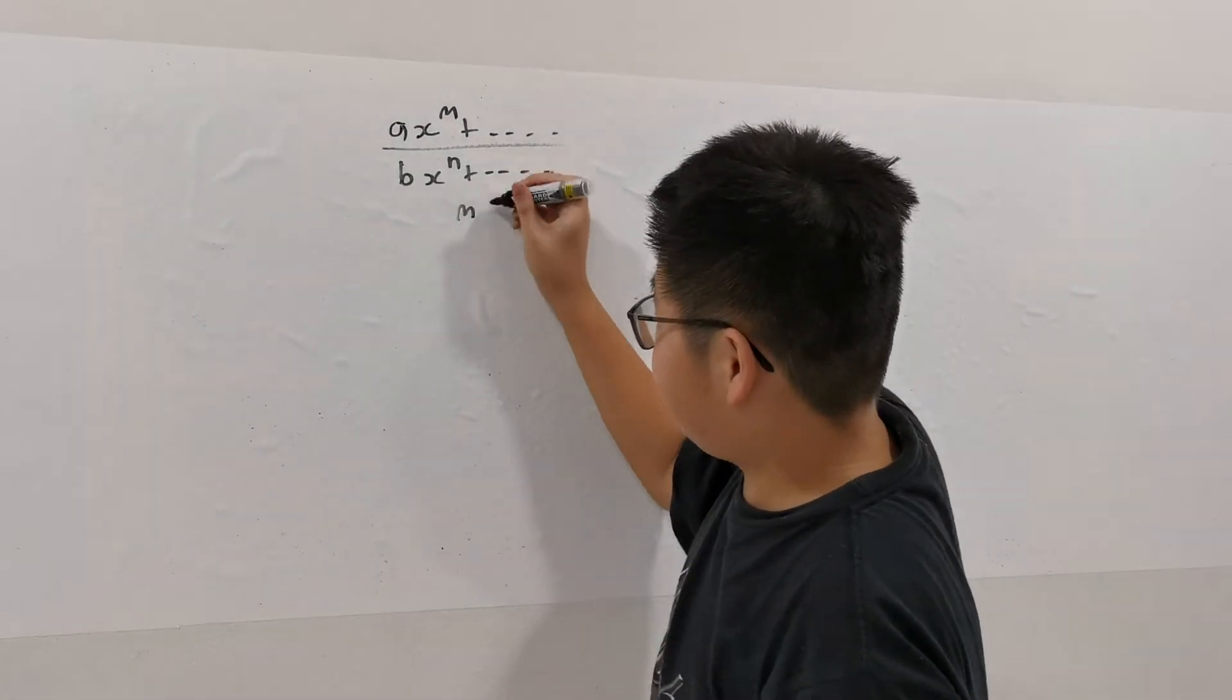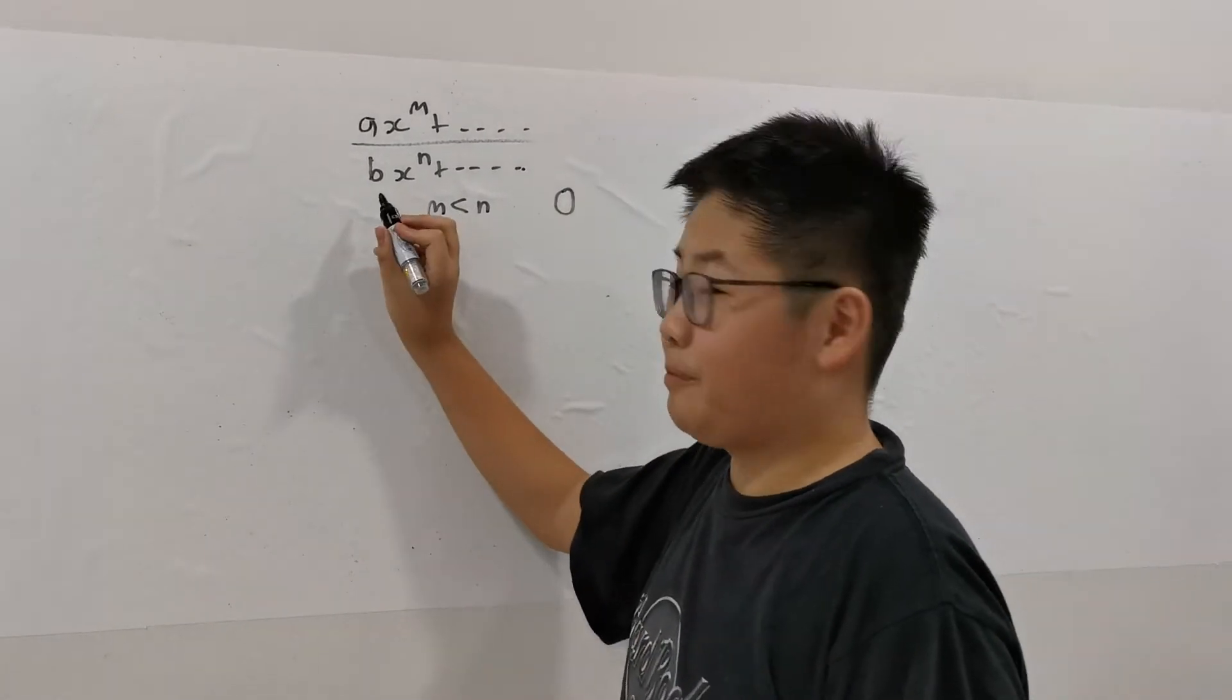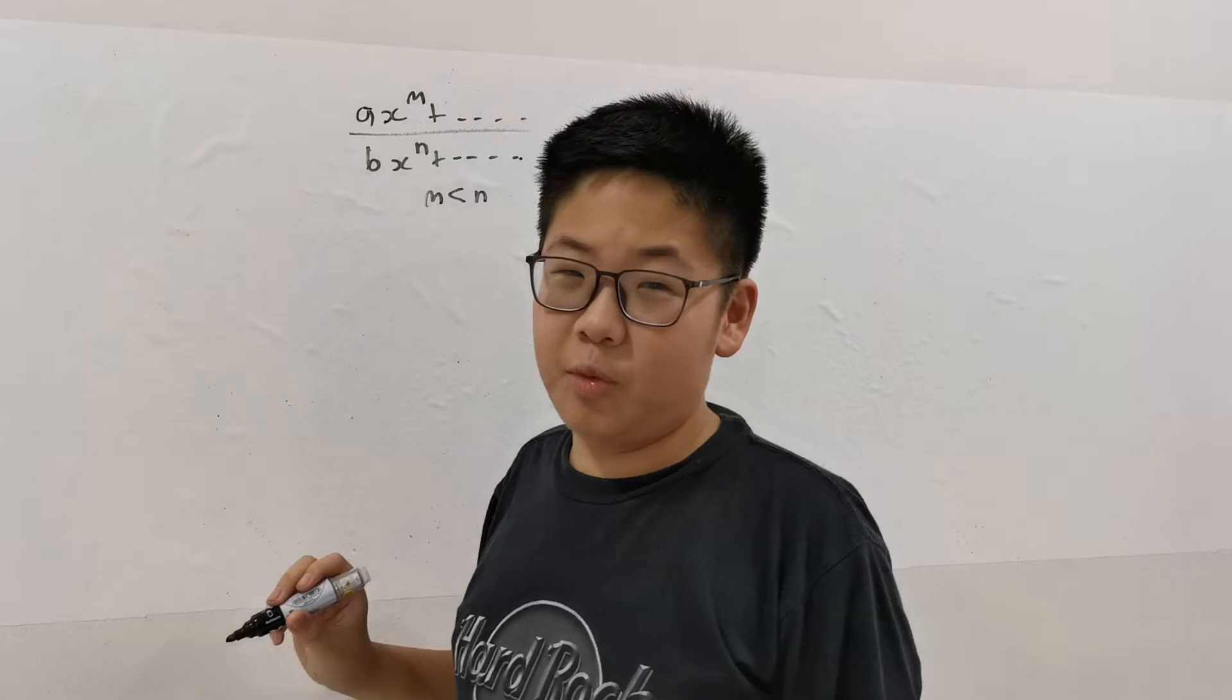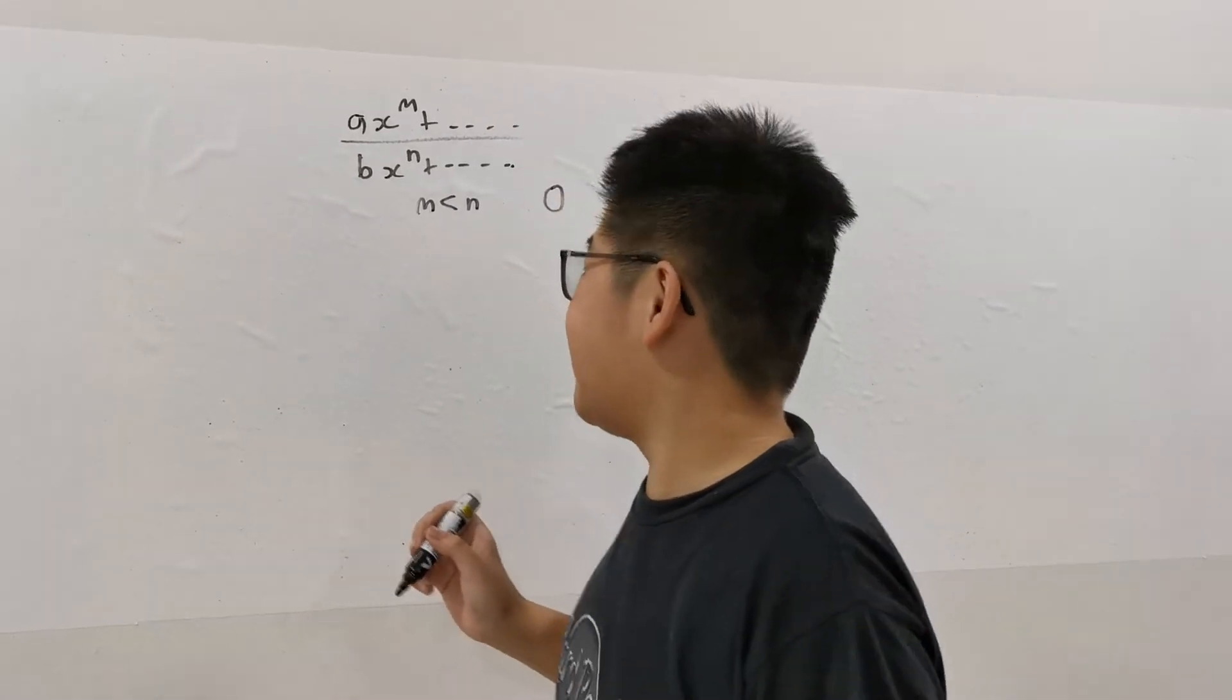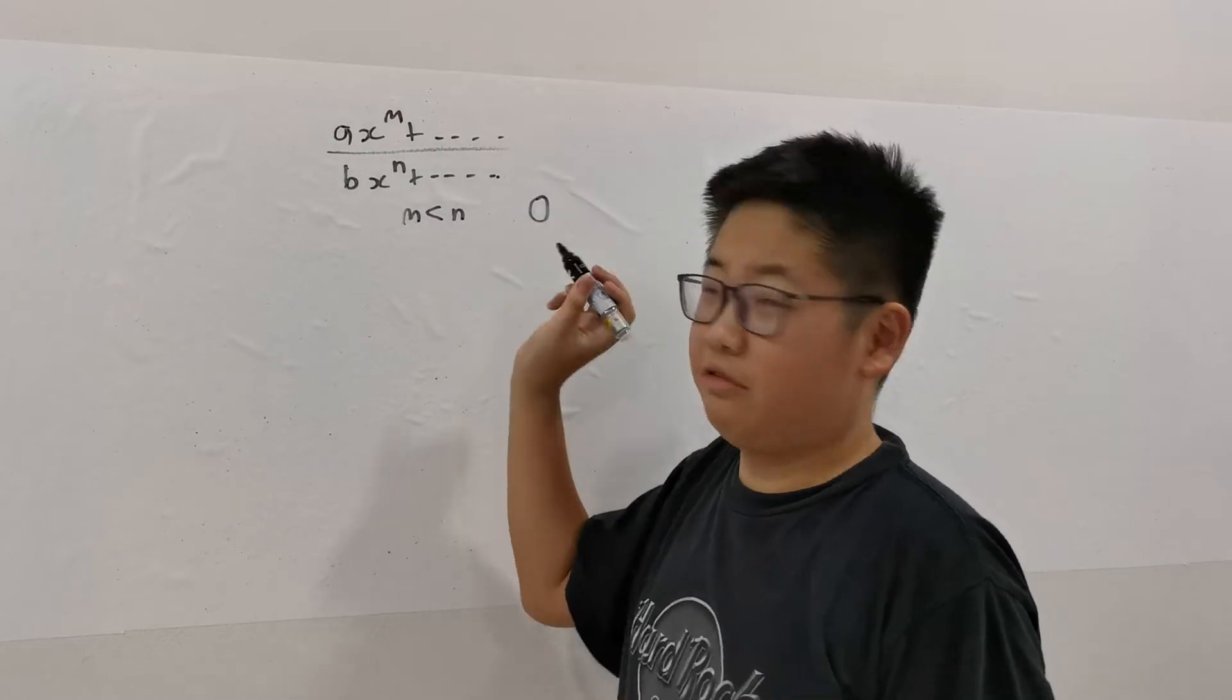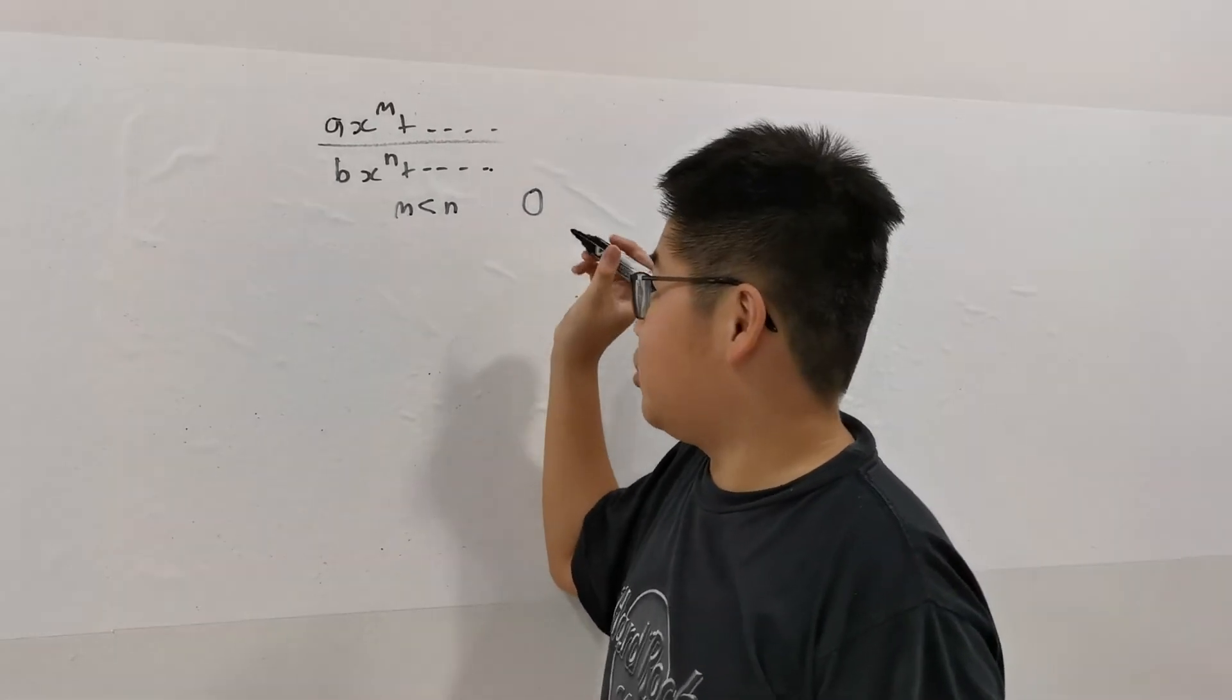So if M is less than N, the limit is 0. So even if B, this B here, is 1 over 1 million, you can guarantee that it is not going to tend to a finite limit in this case. It will only tend to 0.